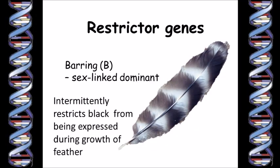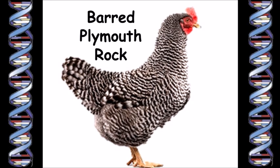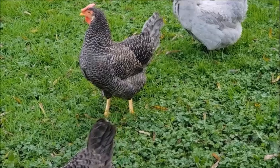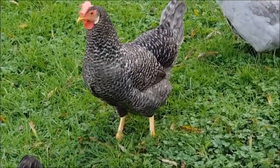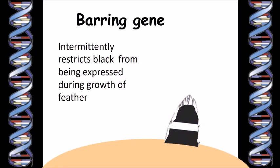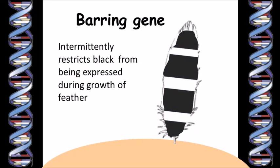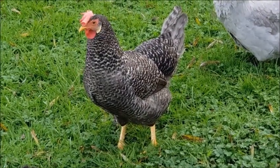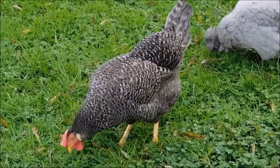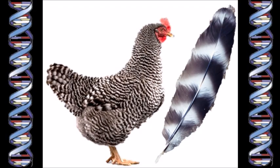The barring gene causes the black eumelanin pigment to be restricted to stripes across the feather. The most well-known chicken with barred feathers is the Barred Plymouth Rock, although cuckoo Leghorns also have the barring gene. The barring gene has its effect by turning pigment depositing on and off again as the feather grows out from the chicken's skin. Leghorns are fast feathering chickens, so the stripes or bars on each feather are blurrier than the crisp stripes on a Barred Rock feather, although there are also other factors that come into play.